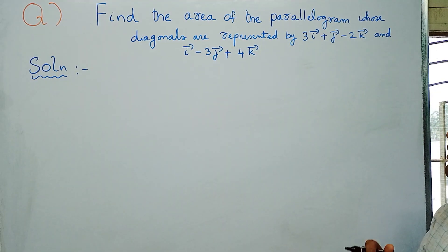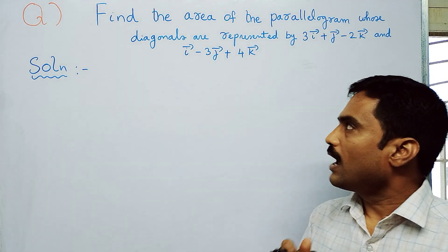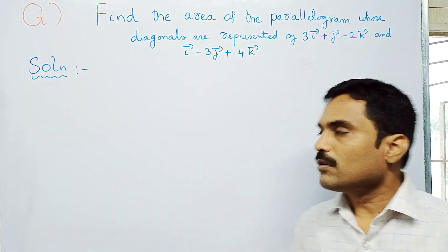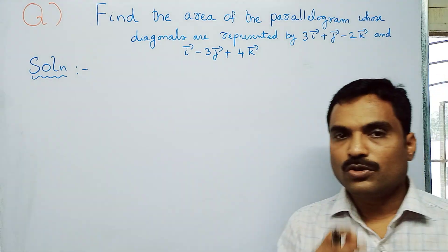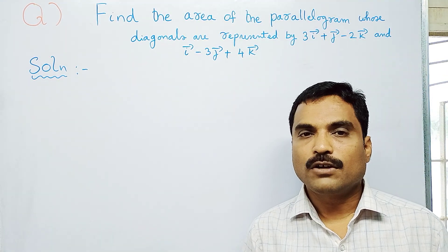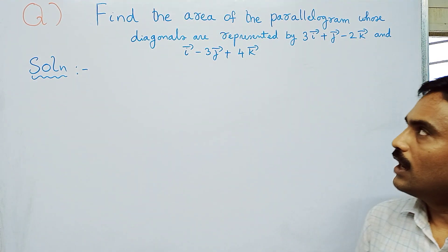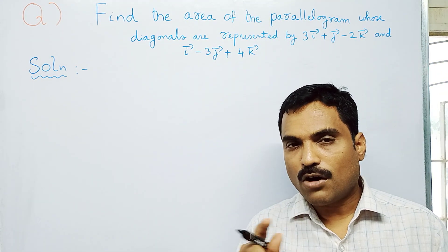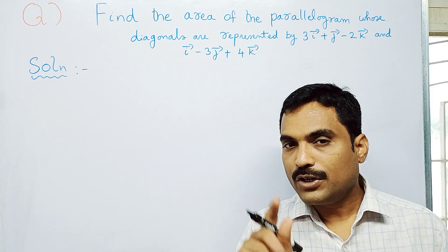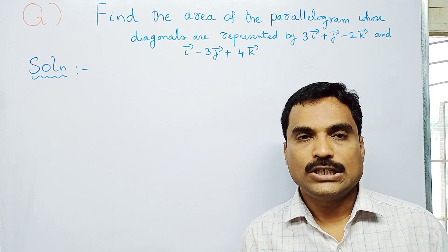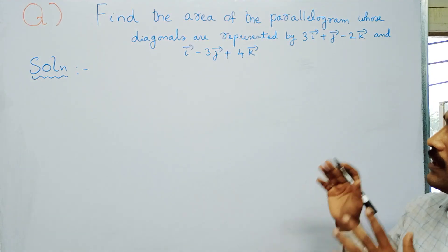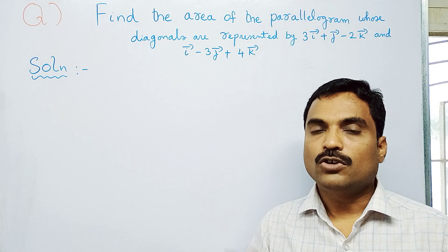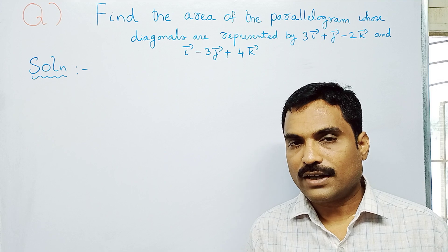In this problem, two diagonals are given, represented by d1̅ and d2̅. You need to find the area of the parallelogram using the formula: area = ½ |d1̅ × d2̅|. That means you need to find the vector cross product between d1̅ and d2̅, and then apply the formula to get the final solution.